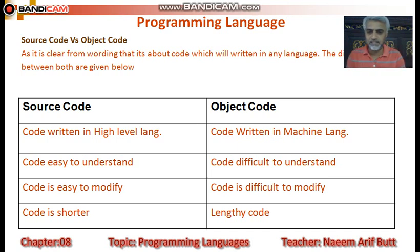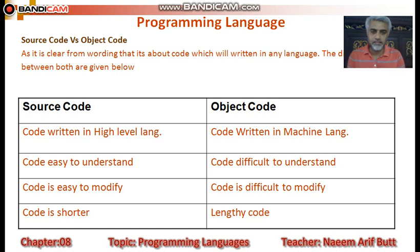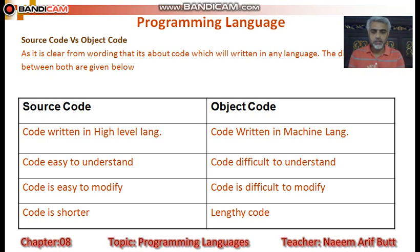Source code اور object code کا comparison چار points کی بنیاد پر کیا گیا ہے۔ Source code — written in high-level language: programmer جو code C، Java، یا assembly language میں لکھے گا وہ source code کہلائے گا۔ یہ human language کے زیادہ نزدیک ہوگا اور machine language سے دور۔ Object code وہ ہے جب source code compiler میں سے گزرے تو compiler ایک file generate کرتا ہے — that is called object code — اور یہ zero-one کی form میں ہوگا۔